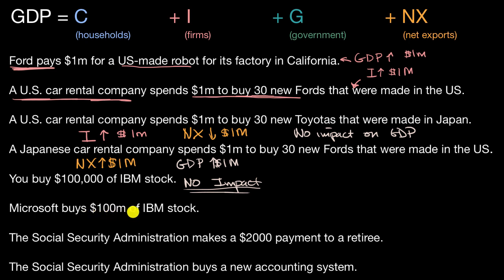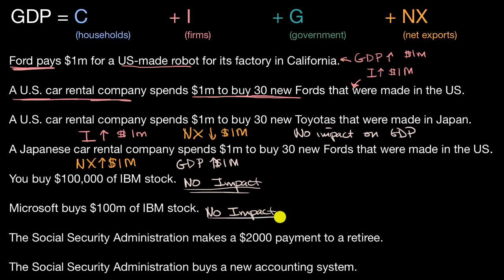Microsoft buys $100 million of IBM stock. This might be even more tempting to put in the investment category because Microsoft is a firm and it looks like it's investing in another firm. But Microsoft isn't buying physical machinery or intellectual capital — it's just buying shares from someone else. Nothing new is being produced in the country, so this has no impact. Microsoft isn't buying something that will help it produce more of whatever it's trying to produce.